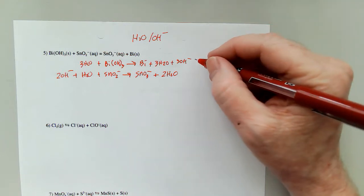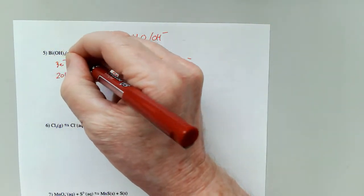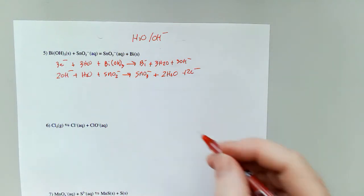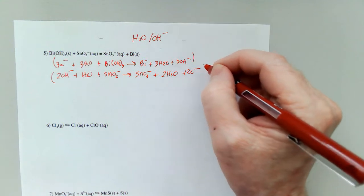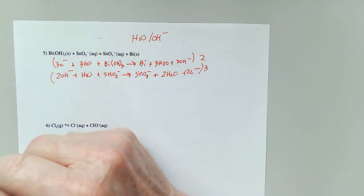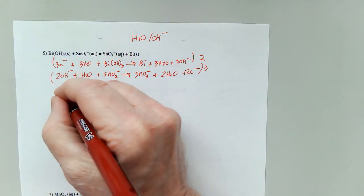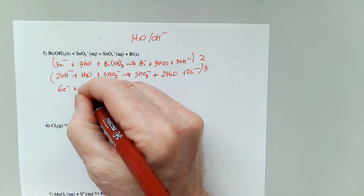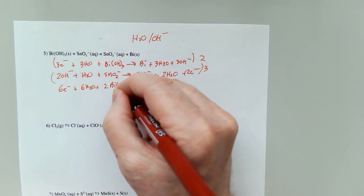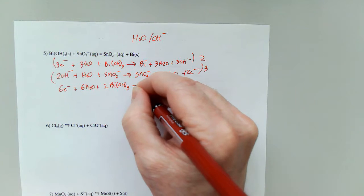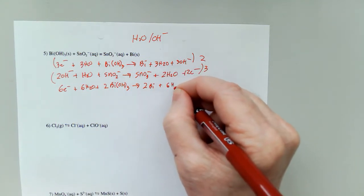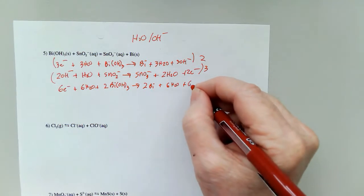Electrons. I've got a need for three electrons here and a need for two electrons there. So I'm going to multiply everything on top by two and everything on the bottom by three. That's going to give me six electrons, six waters, two Bi(OH)₃, two Bi, two times three is six waters, two times three is six hydroxides.